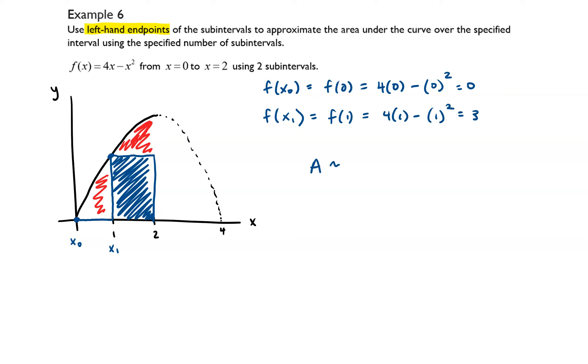So the area is approximately going to be equal to the area of the second rectangle, because the area of the first one is 0, since it has a height of 0, and it's not really a rectangle. So that is going to be the width of the rectangle is 1, and then the height is 3, so then our approximation is 3 for this one, and that is our answer.